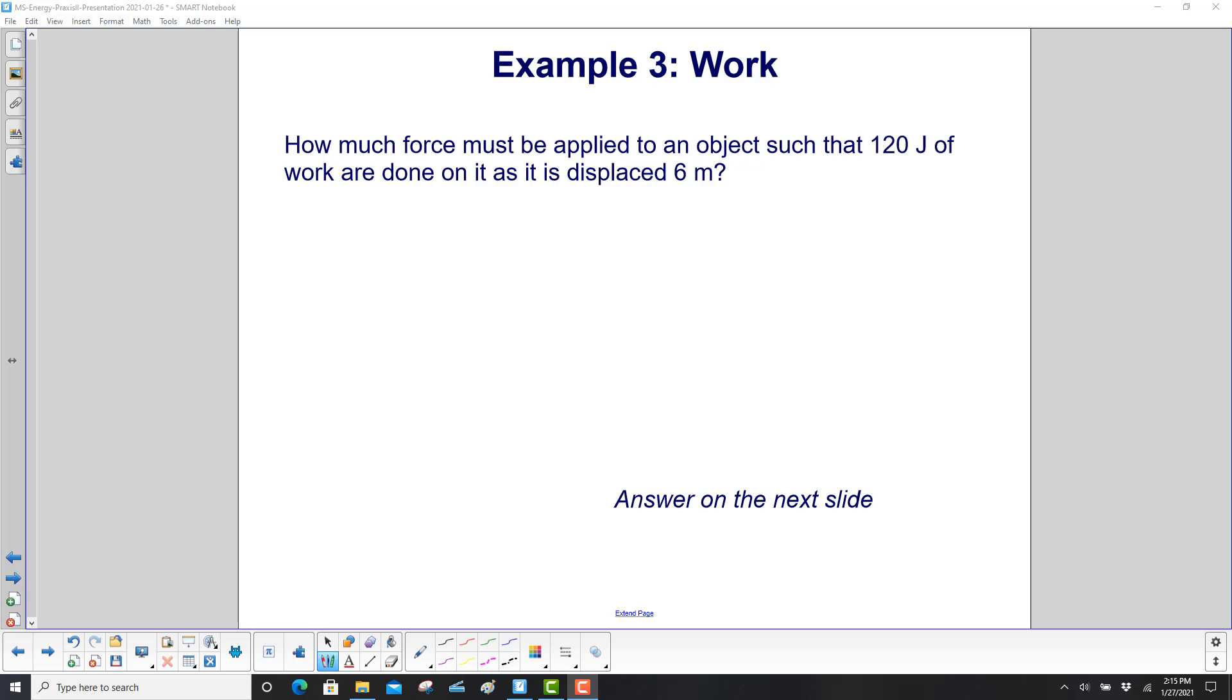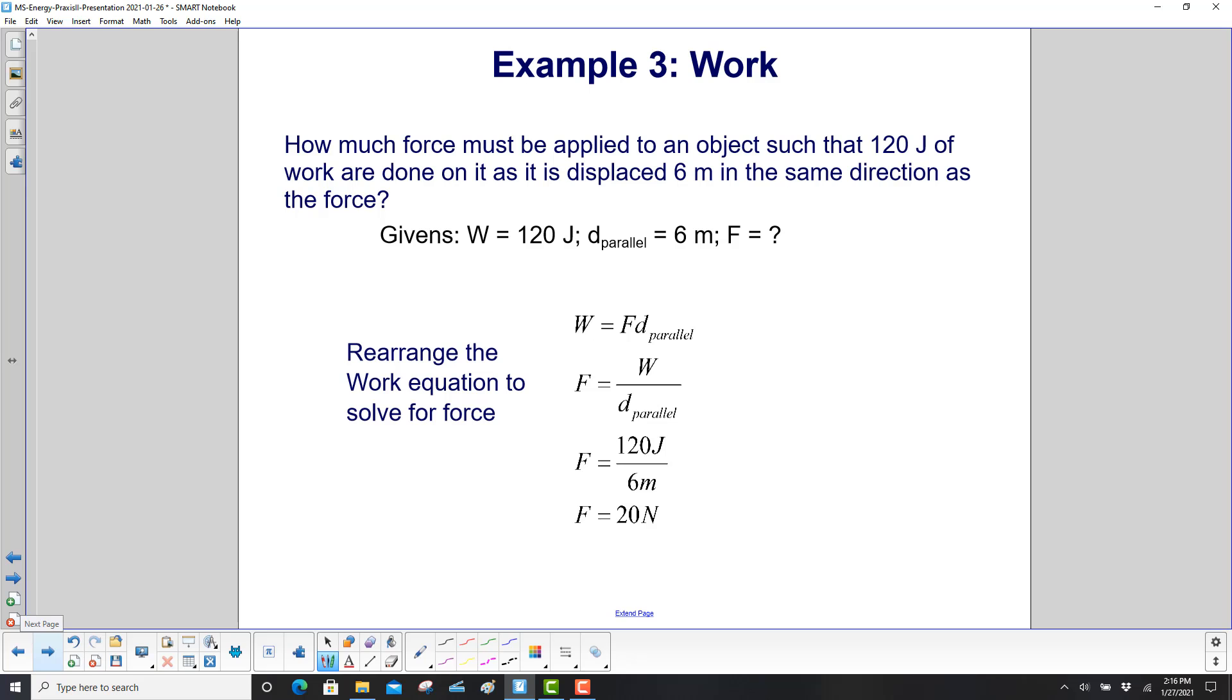How much force must be applied to an object such that 120 joules of work are done on it as it is displaced 6 meters. We write our givens, 120 joules of work, distance parallel 6 meters, and this time we want to find the force. So we start with our work equals Fd parallel. We rearrange that equation to solve for force so F is equal to work over distance, so it's 120 joules over 6 meters, or 20 newtons.